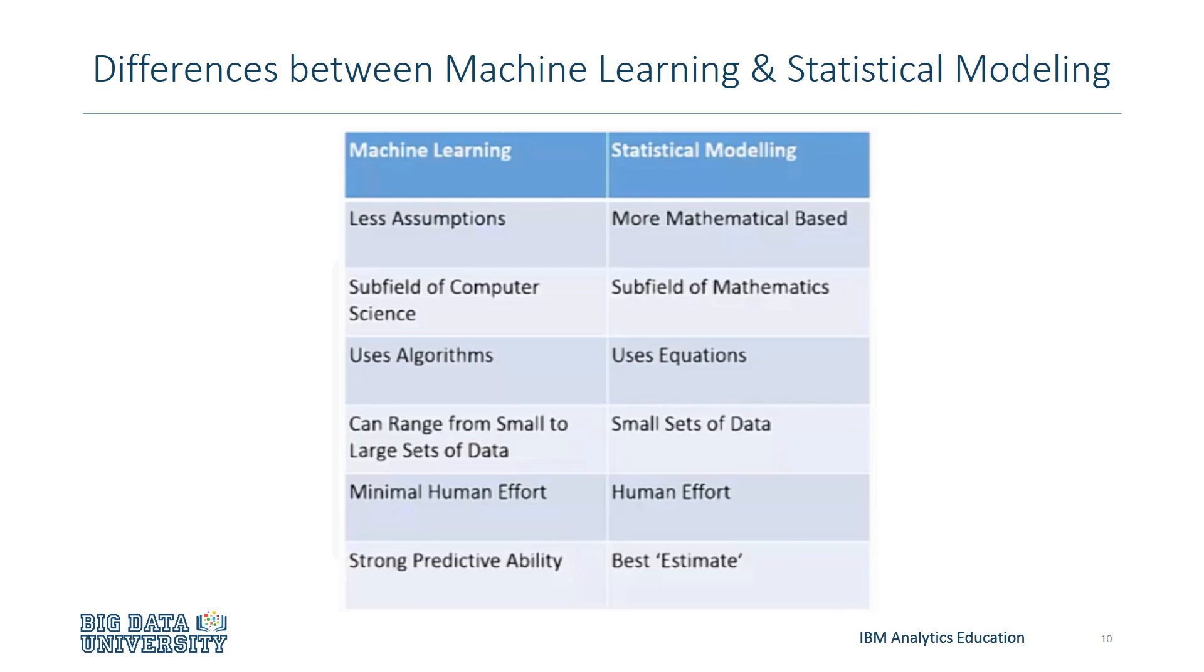Beyond naming convention, there are several other differences between machine learning and statistical modeling. This chart summarizes a few of them. For instance, in machine learning, fewer assumptions are made due to better accuracy from the predictive models, in comparison to statistical modeling, which is more mathematically based.